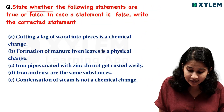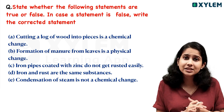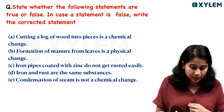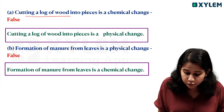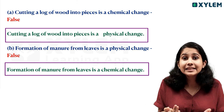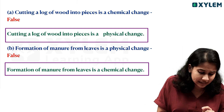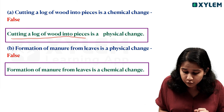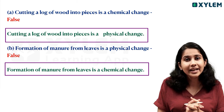The last question: state whether the following statements are true or false. First statement — cutting a log of wood into pieces is a chemical change. We say it is false, because cutting wood is a physical change. We can correct it: cutting a log of wood into pieces is a physical change.